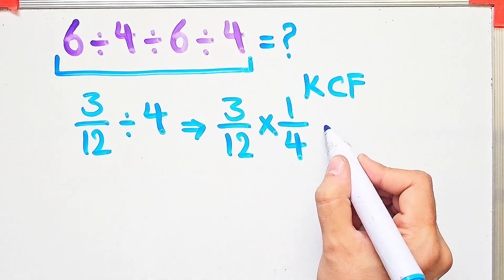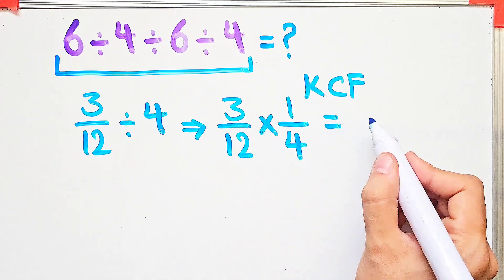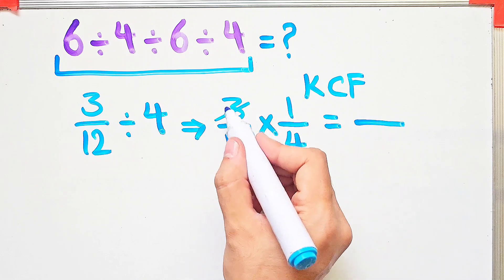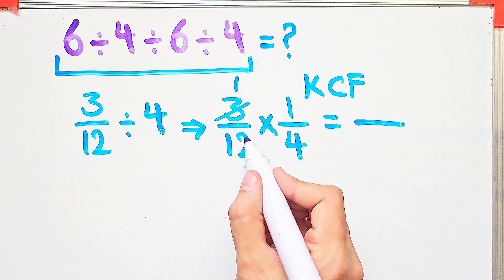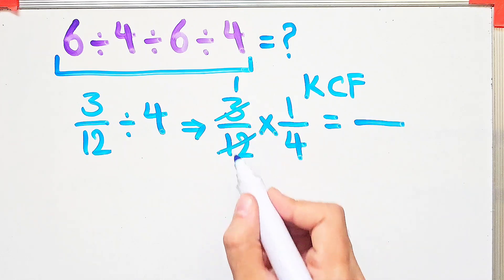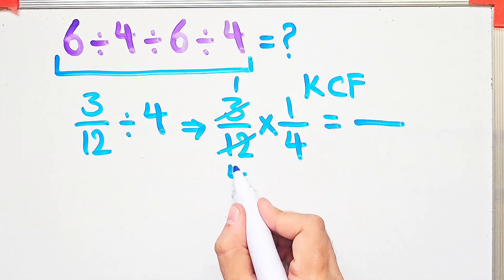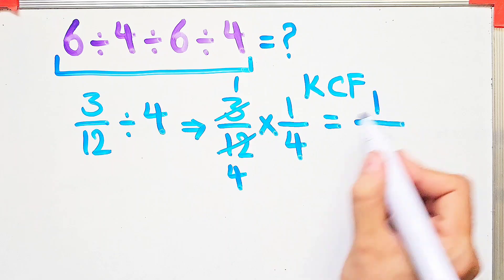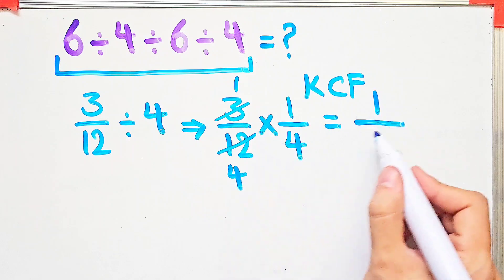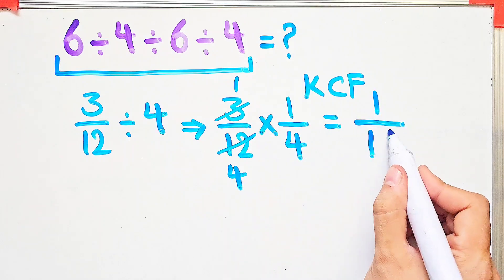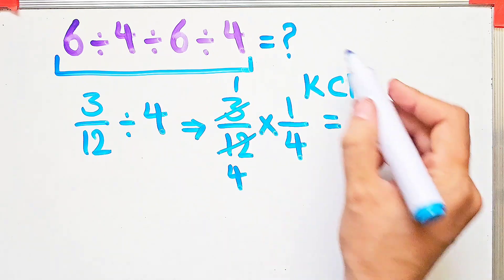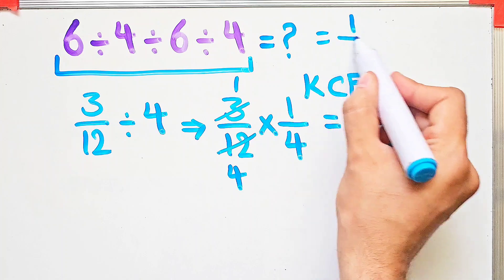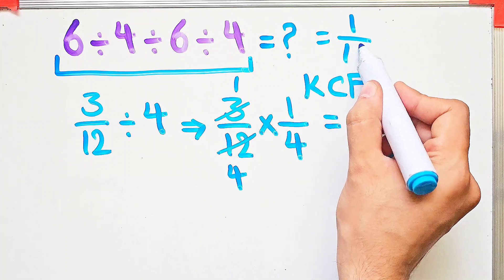Because the numerator and the denominator of the first fraction are divisible by three, we divide both by three. After that we do the multiplication. The final answer of this question equals one over sixteen.